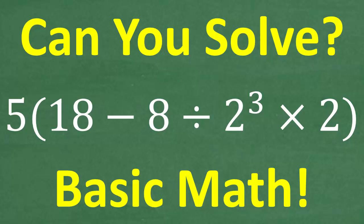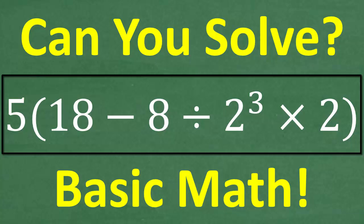So how well do you understand basic math? Hopefully pretty well, because that's all that is required to do this problem here. And of course, most people should be able to solve this because most people should have some basic math skills. Now, this problem is designed to be solved without the aid of a calculator. We could plug all this into a calculator and a right answer will appear, but we want to see what you know about basic math. This would be classified as arithmetic. But let's take a look at our problem here. What we have is: five times parentheses 18 minus eight divided by two cubed times two, end parentheses.